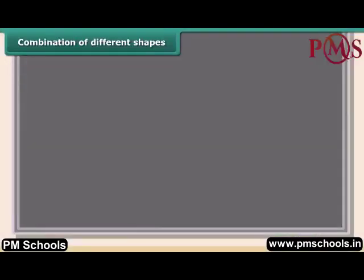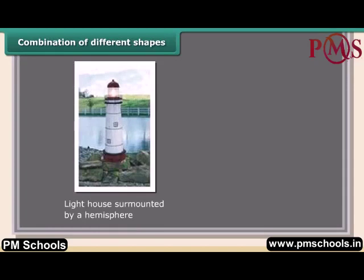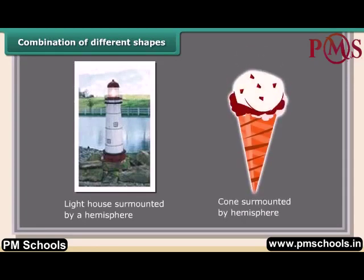Some shapes are a combination of different shapes — for example, a lighthouse surmounted by a hemisphere, or a cone surmounted by a hemisphere. We use these combined shapes in our day-to-day life.